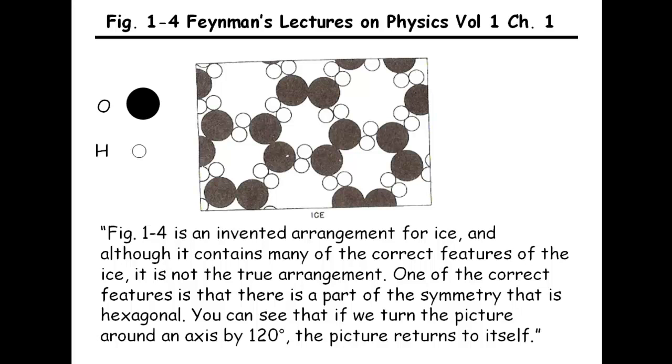One of the correct features is that there is a part of the symmetry that is hexagonal. You can see that if we turn the picture around an axis by 120 degrees, the picture returns to itself.